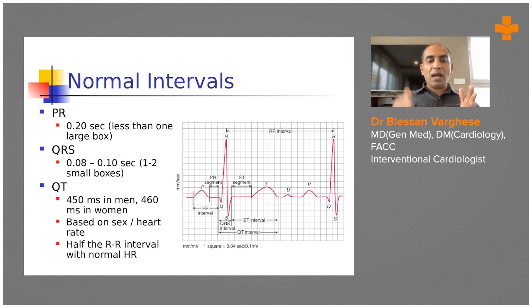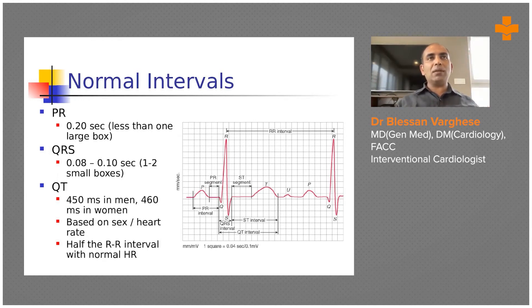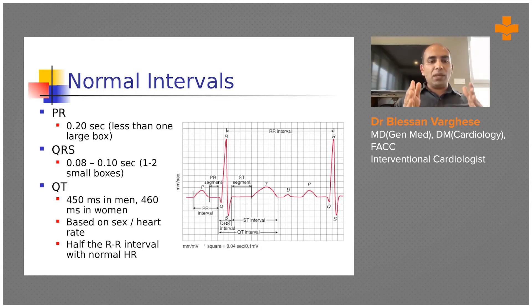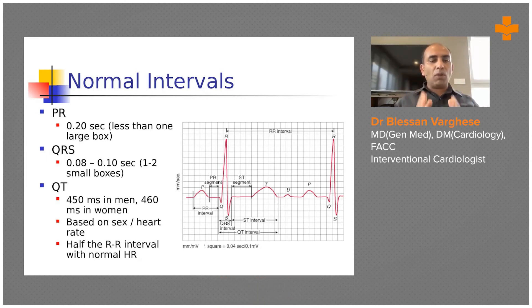The normal duration of the PR interval is 0.2 seconds, which equals one large box. When the PR interval crosses more than one large box, that indicates PR prolongation — which is first degree heart block. This is how you look at the ECG and decide whether there is a heart block. The QRS complex normal duration is between 0.08 to 0.1 seconds — that is about two to two-and-a-half small squares.